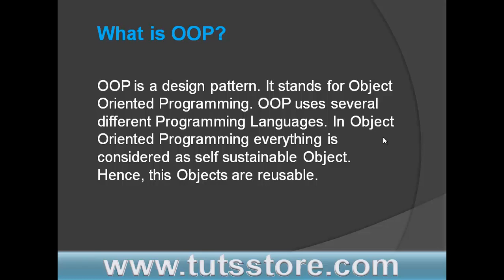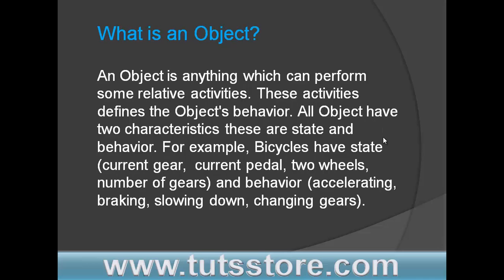That's why objects are reusable. So what is an object? An object is anything which can perform some relative activities. These activities define the object's behavior. All objects have two characteristics: state and behavior. For example, bicycles have state like current gear, pedal, wheels, and number of gears, and behavior like accelerating, braking, slowing down, and changing gears.